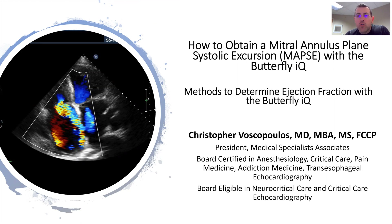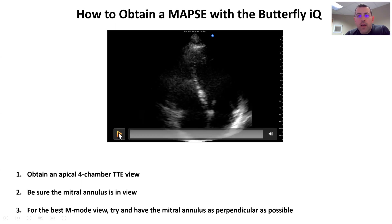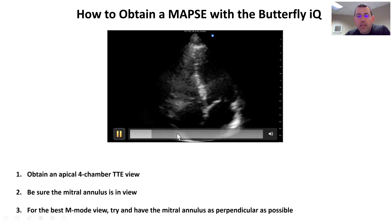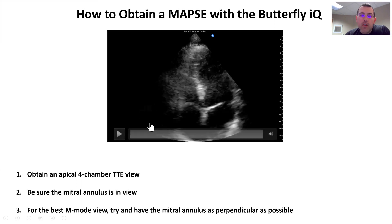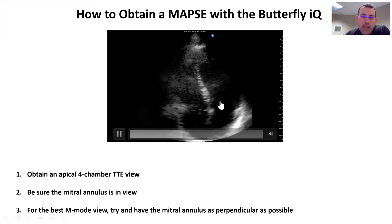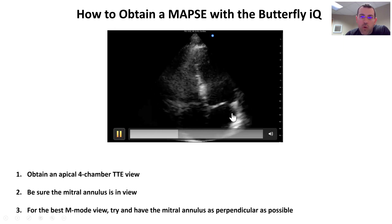The first item is that in order to get a MAPSE, we need an apical four-chamber view. Here we see a typical apical four-chamber view. What I want to bring to your attention is that what we want to make sure is in plane and in view is the mitral annulus, which is right here. I'm going to show it again — the mitral annulus, which is right here.